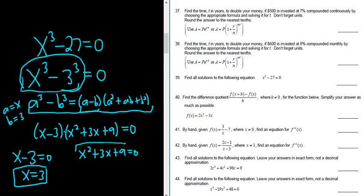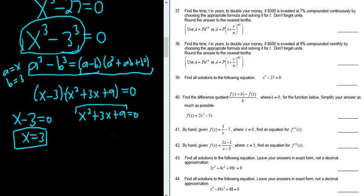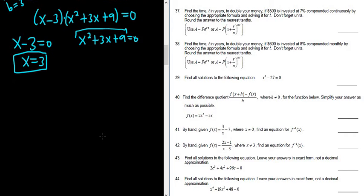Now we just need to solve x squared plus 3x plus 9 equals 0. This is going to take some work. We can do it one of two ways: complete the square, or use the quadratic formula. Let's use the quadratic formula. Recall that you need to find a, b, and c. There is a 1 in front of x squared, so a is 1, b is 3, and c is 9.